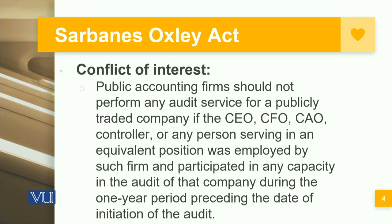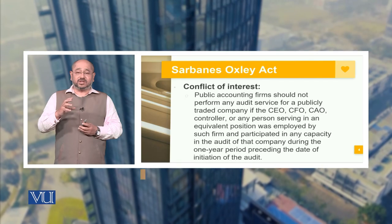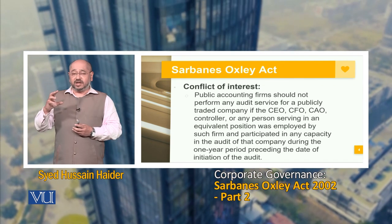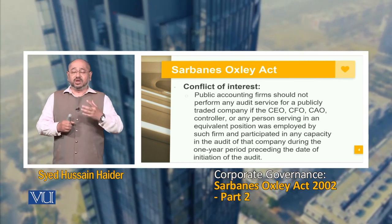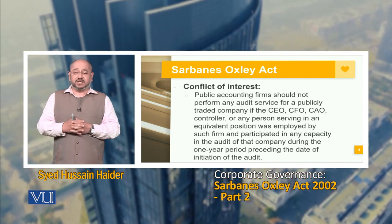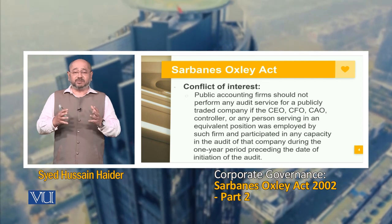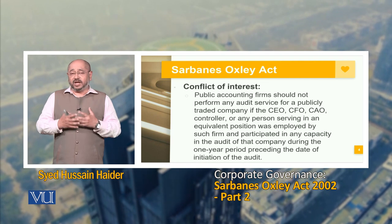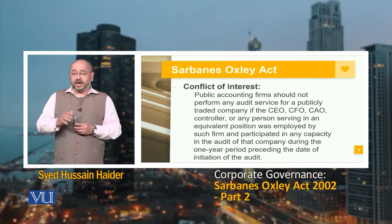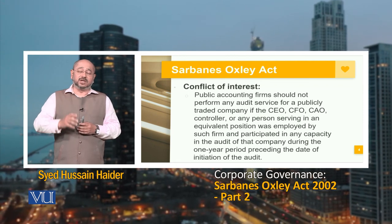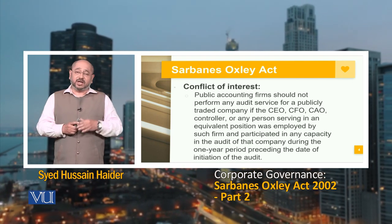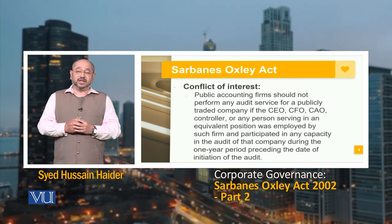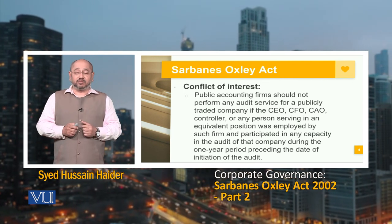A very important aspect of this act is also the conflict of interest. Public accounting firms should not perform any audit service for a publicly traded company if the CEO, CFO, chief accounts officer, controller, or any person serving in an equivalent position was employed by such a firm and participated in any capacity in the audit of that company during the one-year period preceding the date of the initiation of the audit. To eliminate conflict of interest, this important clause is positioned in the Sarbanes-Oxley Act.